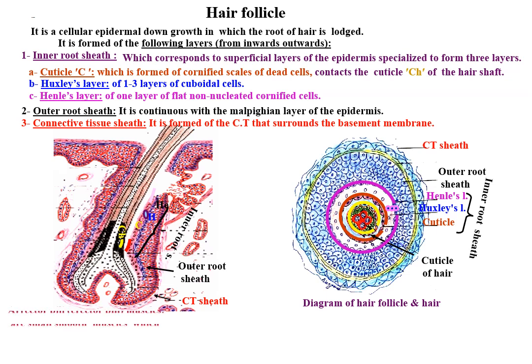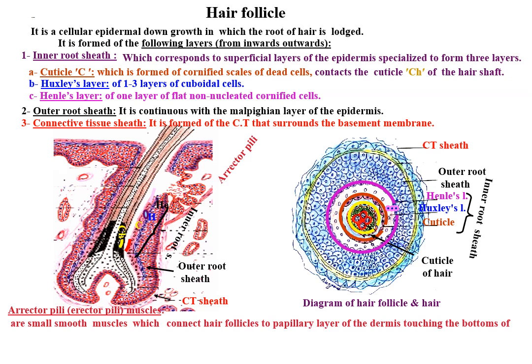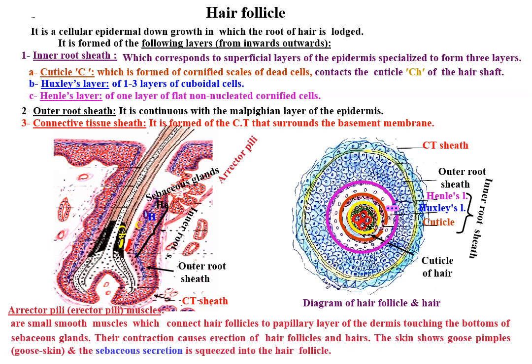Erector pili muscles are small smooth muscles which connect hair follicles to the papillary layer of the dermis, touching the bottoms of the sebaceous glands. Their contraction causes the hair follicle and the hair to become erect. The skin shows goose pimples, and the sebaceous secretion is squeezed into the hair follicles.